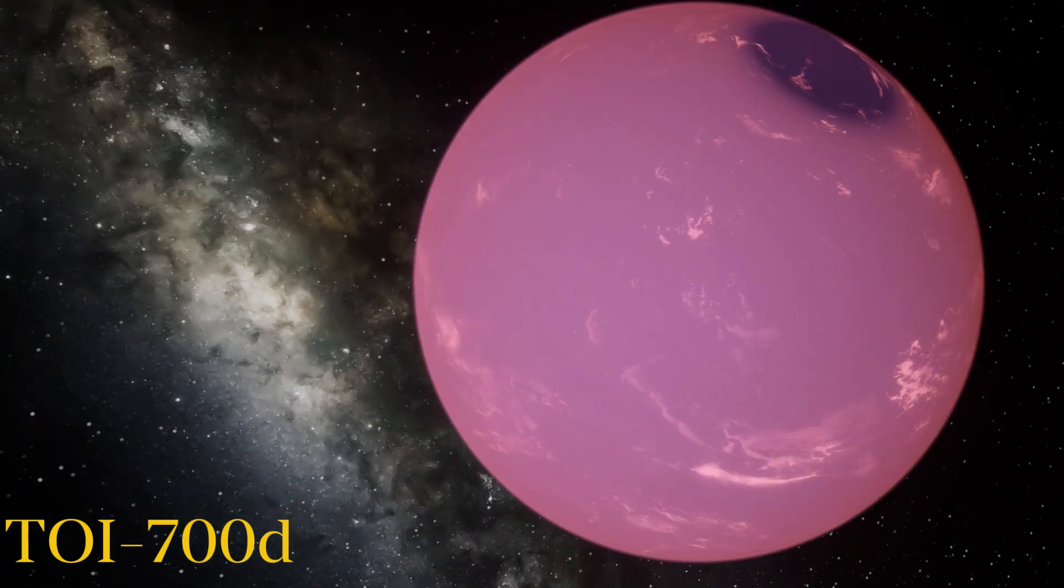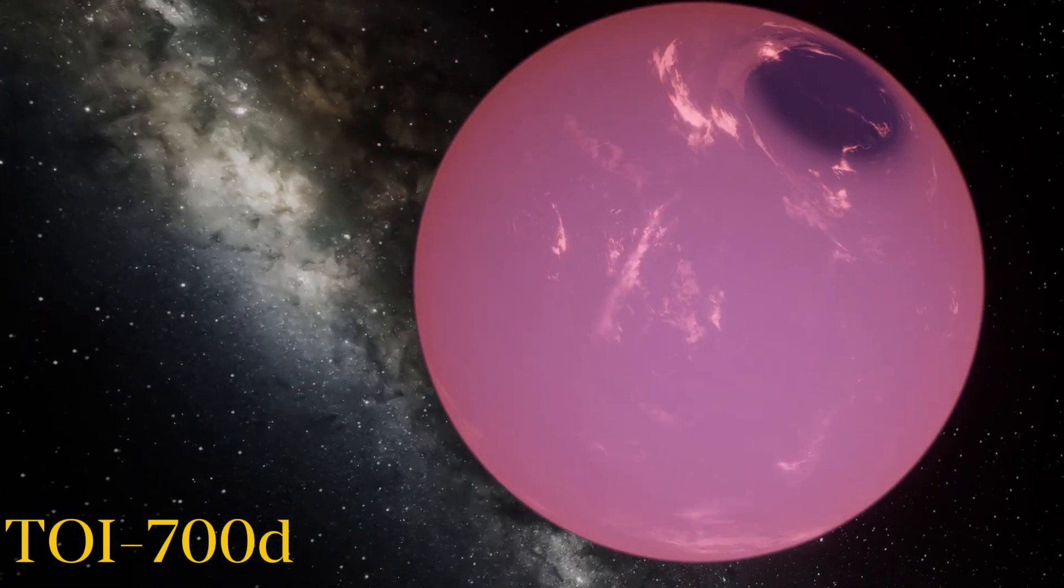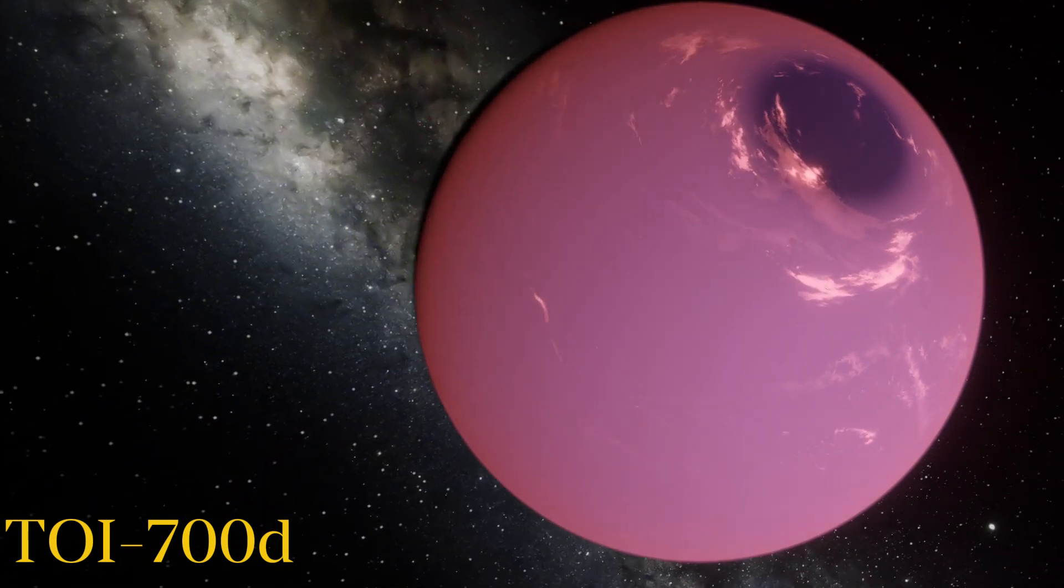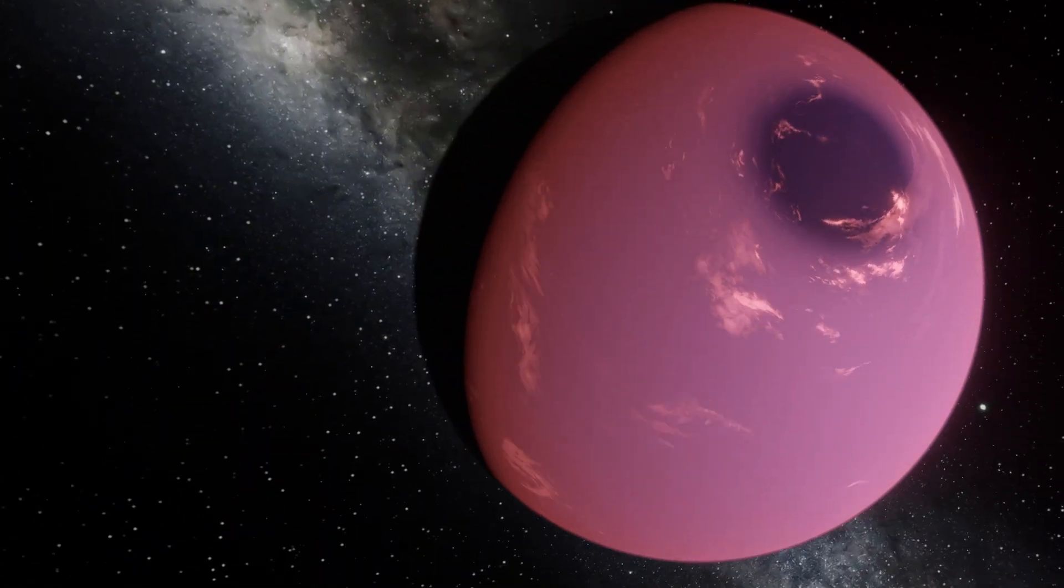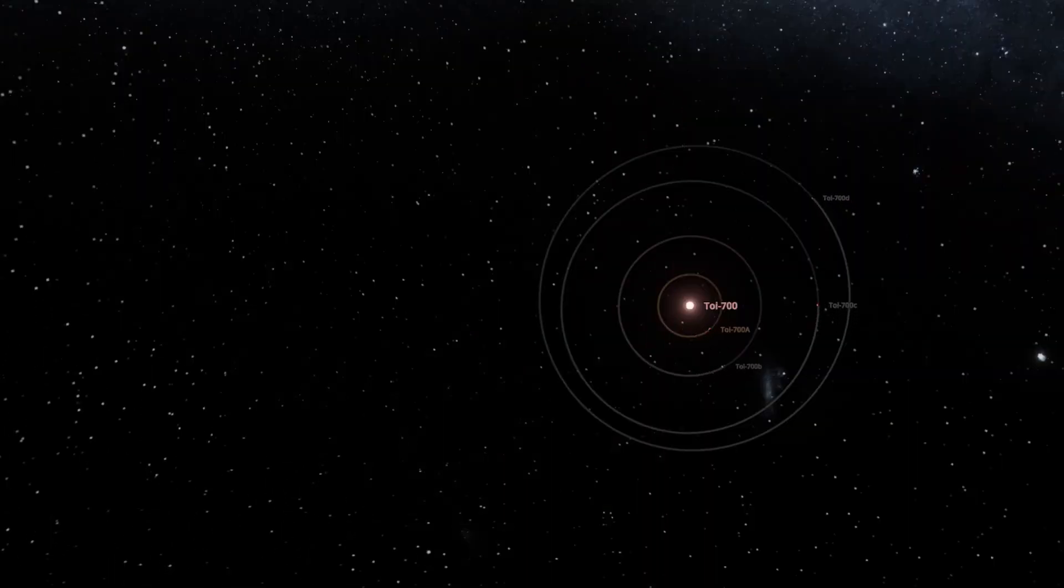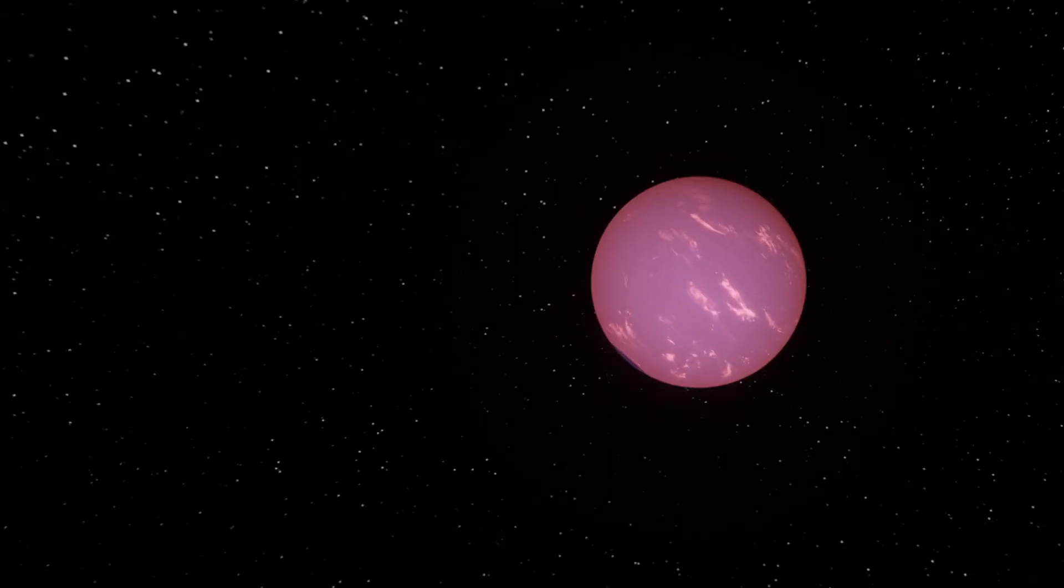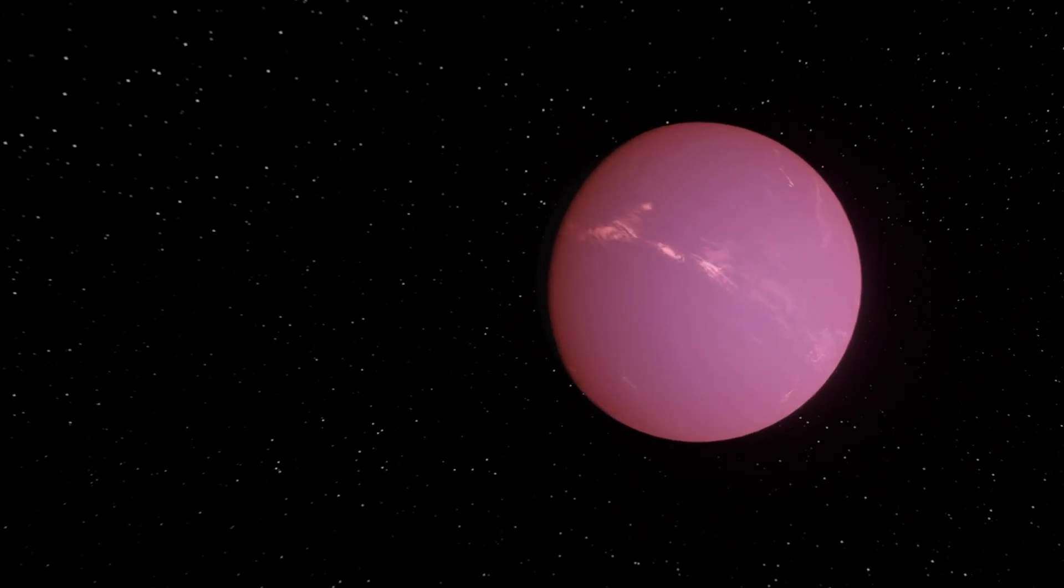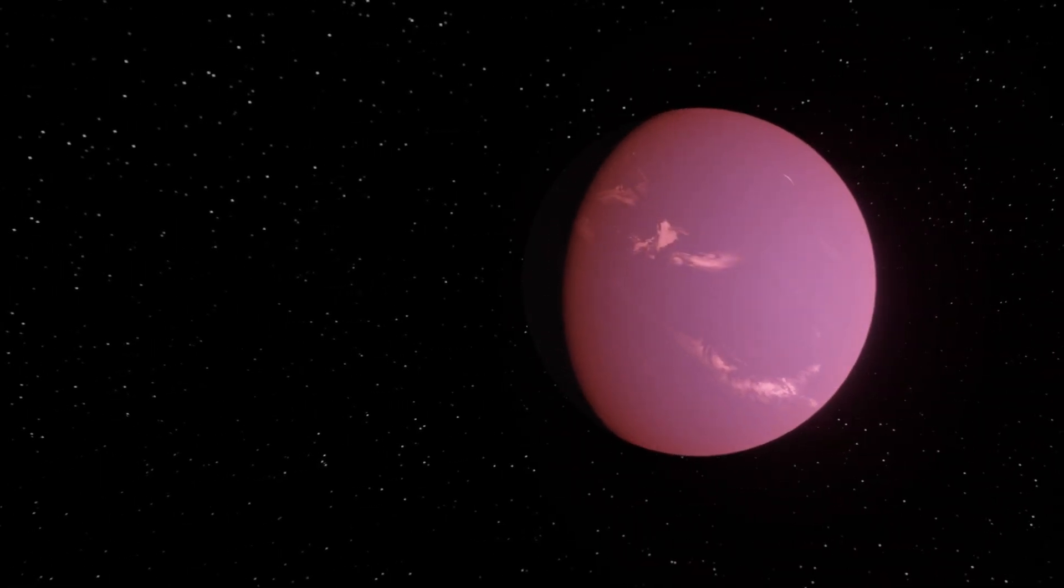This exoplanet was determined to have a magnetic field similar to our own Earth as well. This planet has a decent chance of containing life, but we do not have a lot of information on it yet. But what I will say is all the information we have seems to be good information, with the small exception of its mass. TOI-700d has a mass of 1.25 Earth, so gravity may be a little stronger there than what we experience.